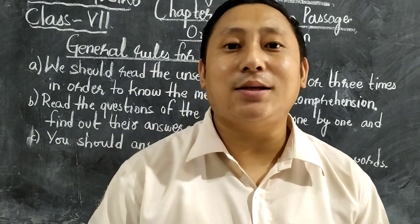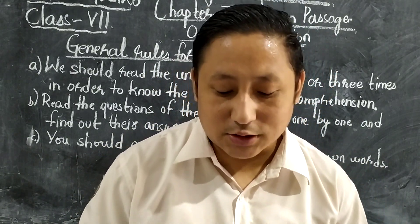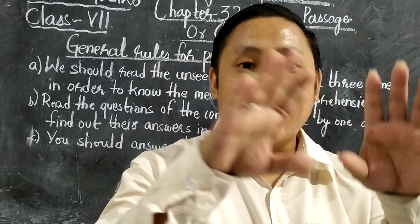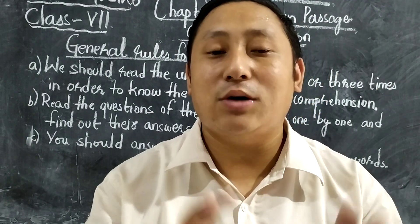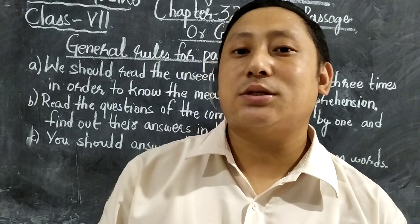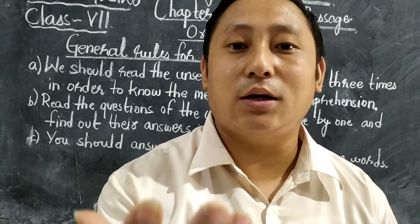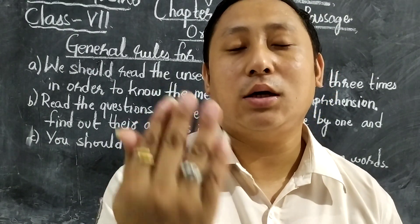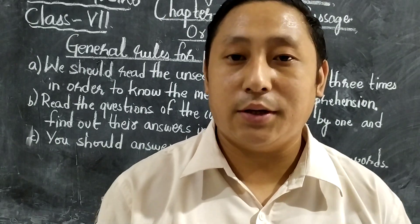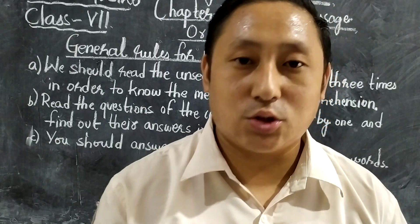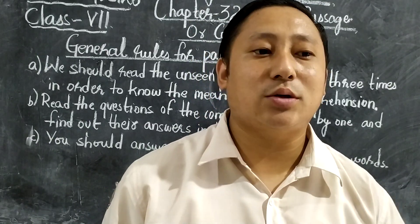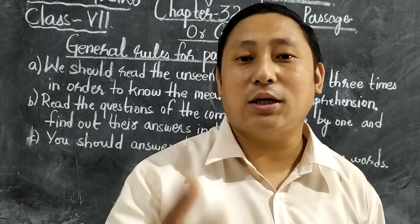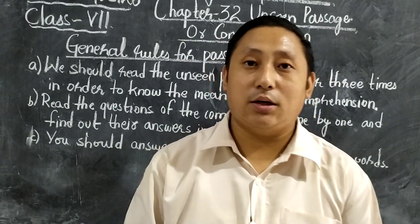Point number six: you should write the summary, substance, or gist — about one third of the passage. That means you should always write a short summary of what the passage is saying. For example, I always give you a short summary in your classwork — about the poem, about the stories and all. Like that, you have to write the same thing: a short summary about the passage.